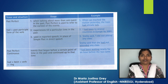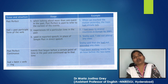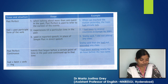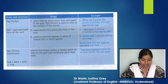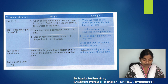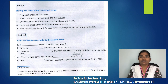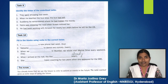Next is past perfect continuous. For this we need 'had' plus 'been' plus verb plus '-ing.' We use past perfect continuous to talk about events that began before a certain point of time in the past and continued up to that time. For example, 'I had been waiting nearly an hour before the bus came.' Let's do Task 9: identify the tense of the underlined verbs. Please pause the video, do the task, and then we will discuss the answers.